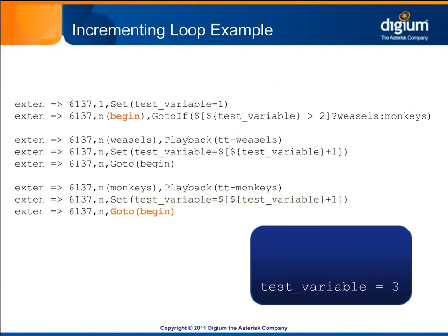This time, the expression tests whether three is greater than two. It is, so the weasels label is followed. ttweasels is played. Notice that we did not set the begin label to the priority which calls the set application. This is because it would reset the value of test variable back to one each time the loop is called, which would negate the value of incrementing the variable.